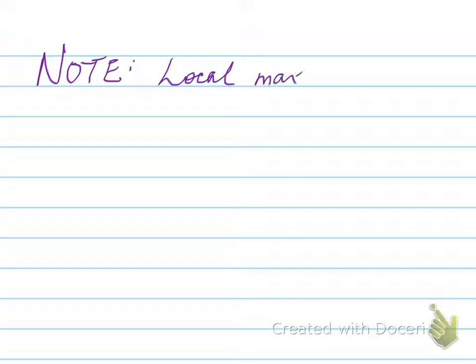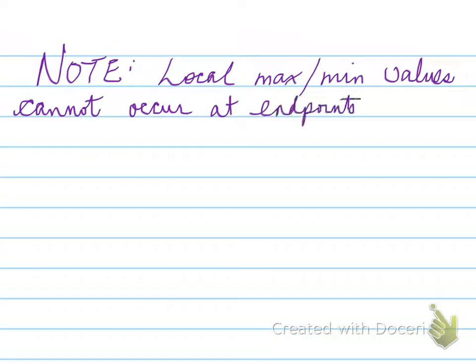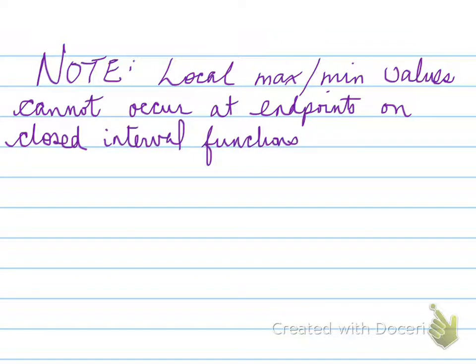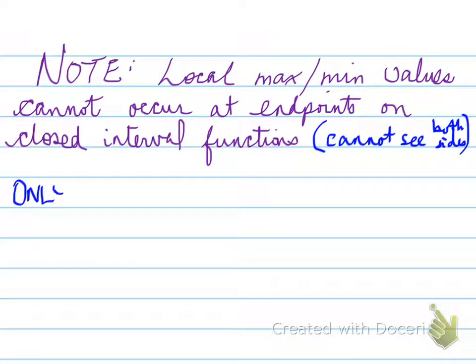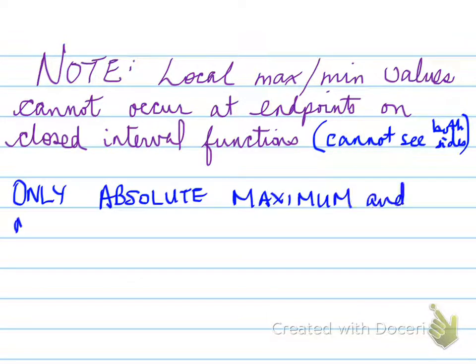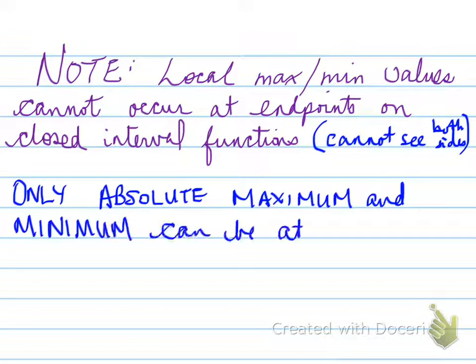Note: a local maximum value cannot occur at endpoints on closed interval functions, because you cannot see both sides. Only absolute maximum or minimum values can be at endpoints — you can have an absolute value at an endpoint, but not a local one.